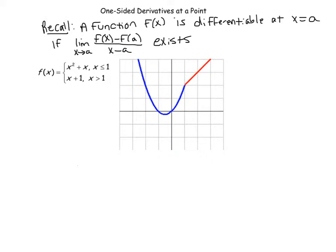First of all, let's recall that a function is differentiable at x equals a if this limit — the limit of the difference quotient — exists. That implies there's a right-hand and a left-hand limit of that difference quotient, and that both exist and equal the same value. With a piecewise function, we can look at the left and right-hand derivatives using this definition and see if those values match up.